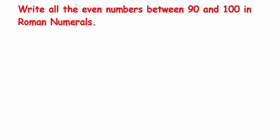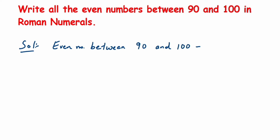The even numbers between 90 and 100 — we will not include 90 and will not include 100. So the even numbers in between are 92, 94, 96, and 98. Note that 100 is also an even number but we're not including it since the question asks for numbers between 90 and 100. Now we have to write these in Roman numerals.